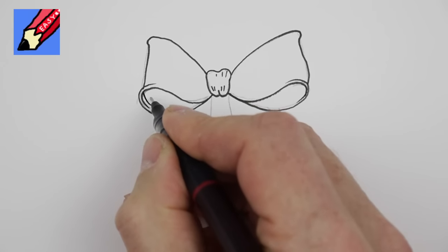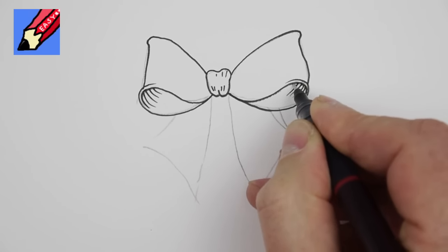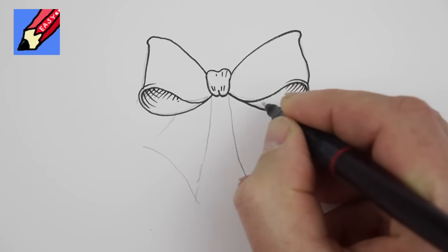And then you want to keep flicking some shading in there like that, and you can maybe put some more shading in like that.